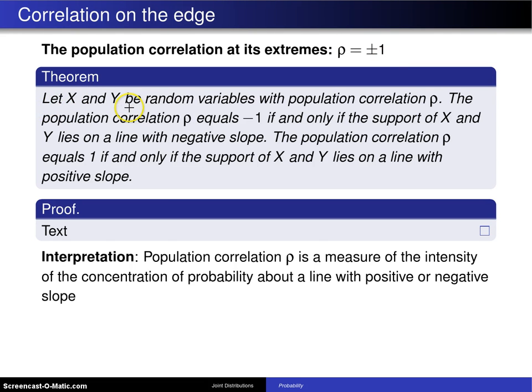Let x and y be random variables with population correlation rho. The population correlation rho is equal to negative 1 if and only if the support of x and y lies on a line with negative slope.